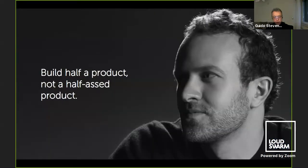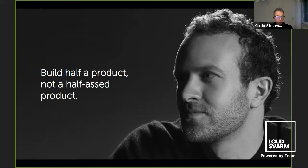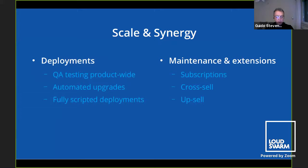What that boils down to is: build half a product, not a half-assed product. This is from Jason Fried of 37signals. Instead of building something that is fully functional but weird, it's better to build something really slick with a lot of potential to grow into the future — even if not fully realized yet, it's still already useful.